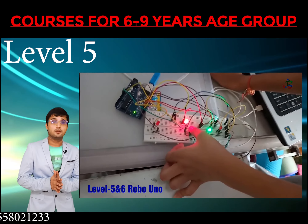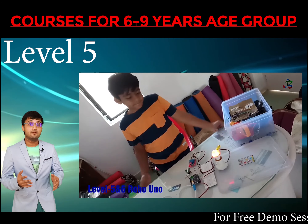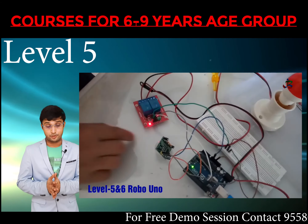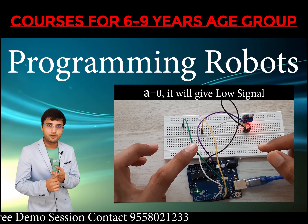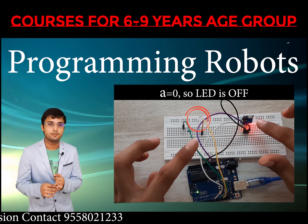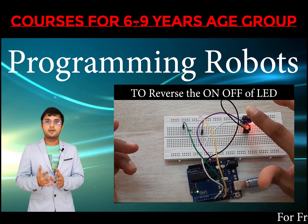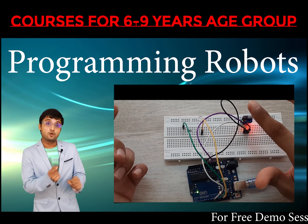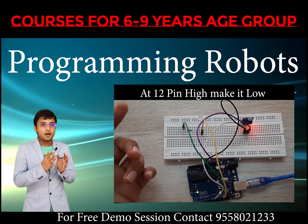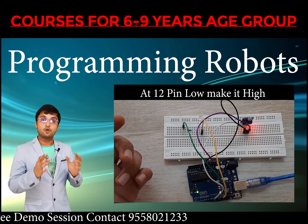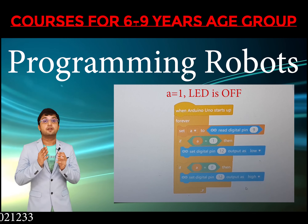From level five, kids start learning programming concepts — how to control the robot automatically without a remote. They learn programming commands such as motor on/off functions, if functions, forever loops, and how to repeat functions multiple times. Kids also learn three types of sensors and how to program sensor functions, so that after programming, the robot operates fully automatically. This programming content covers levels five through eight.